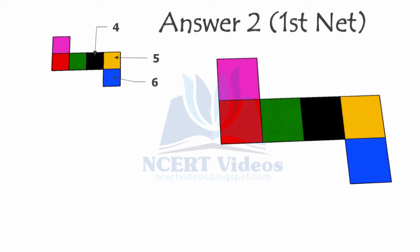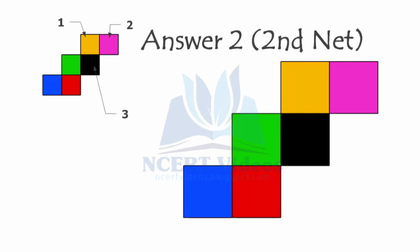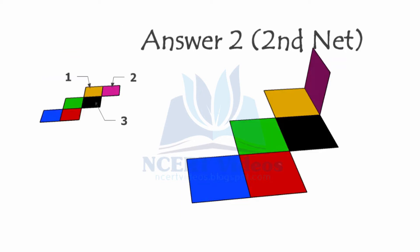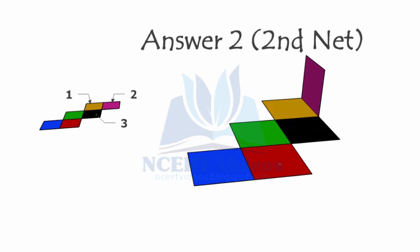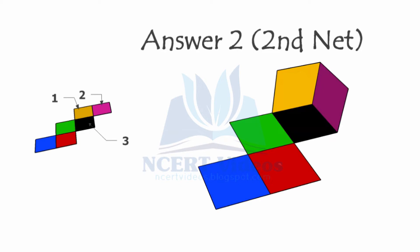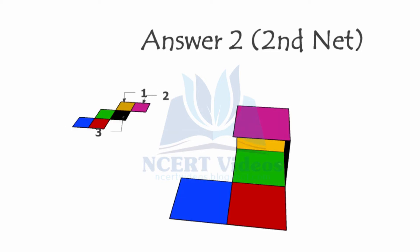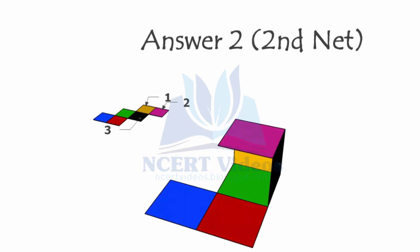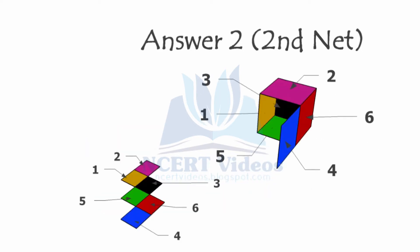Here we have the second net, and we follow the same procedure. We fold the pink square first - you can fold in any order as long as you finally construct a cube. Then fold from the yellow part as shown, then from black, then from red - our cube is almost complete. We leave the blue square open to show the background so you can see: when we connect the blue face, its opposite side is black. Blue is four and black is three: four plus three is seven. Yellow and red make seven: one plus six. Green and pink make seven: five plus two. So both nets make valid dice.